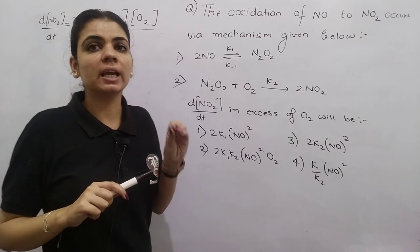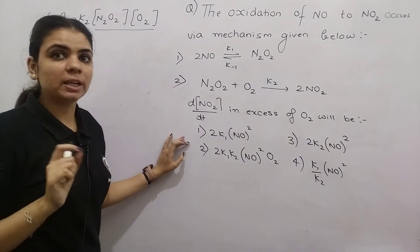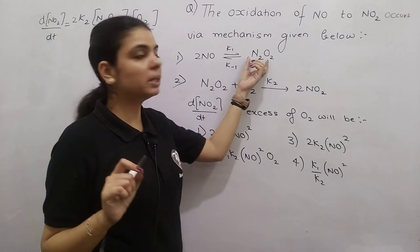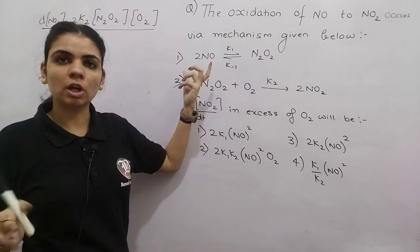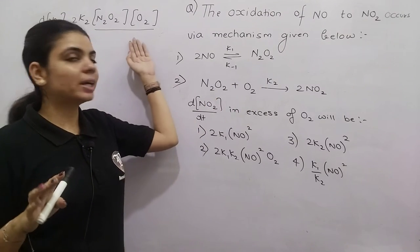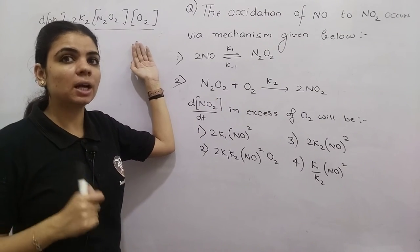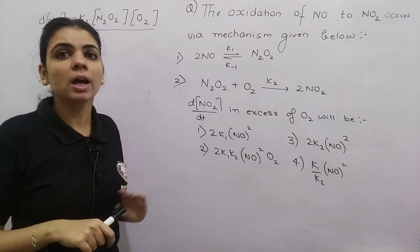The reason is that the final answer never contains intermediates. If you check the final answer, what is the intermediate here? Something that is neither reactant nor product, just formed and consumed in between. N2O2 is the intermediate of this reaction, so it never appears in the final answer.